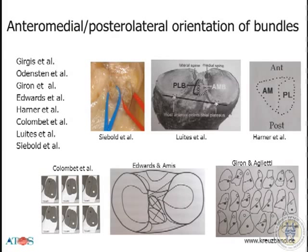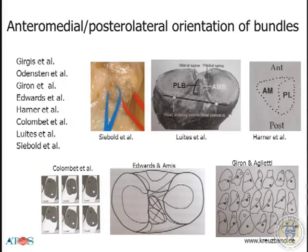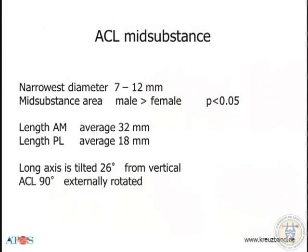I think we agree that the anteromedial and posterolateral orientation of the bundles is according to their names, and there are also different publications on that. The anteromedial bundle is more anteromedial on the tibial side and the posterolateral bundle is more posterolateral. And we have the ACL mid-substance, which I think is very interesting — the narrowest diameter is between 7 and 12 millimeters. So we never go to 12 when we reconstruct an ACL, but we are in between 7 and 12, which I think is a good range for our grafts.